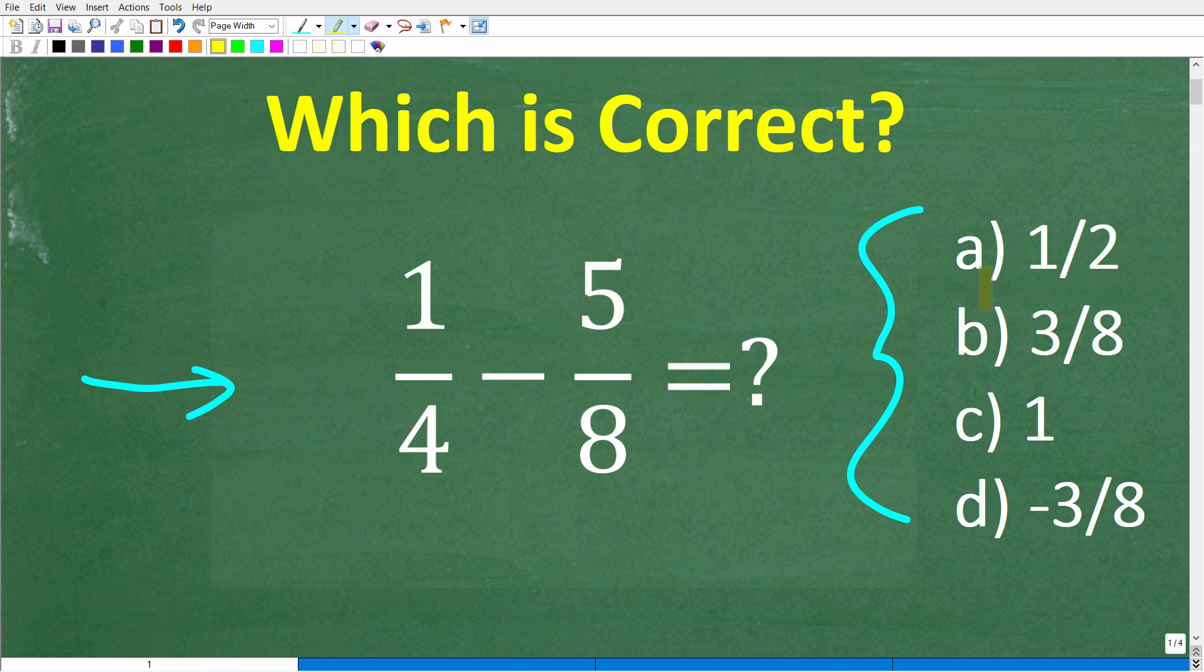So we are subtracting fractions here. We have 1/4 minus 5/8, and obviously this is a multiple choice question. Let's take a look at the answers here. So A is 1/2, B is 3/8, C is 1, and D is negative 3/8. Now if we could figure this out, and again remember, the only rule here is no calculator. But if you have the answer, put that into the comment section. I'll show you the correct answer in just one second.